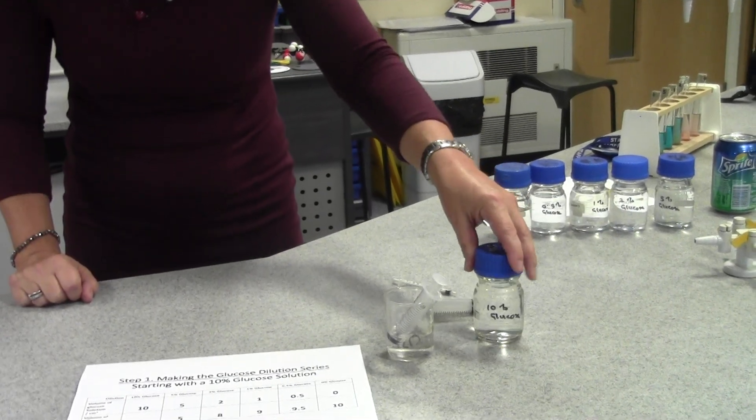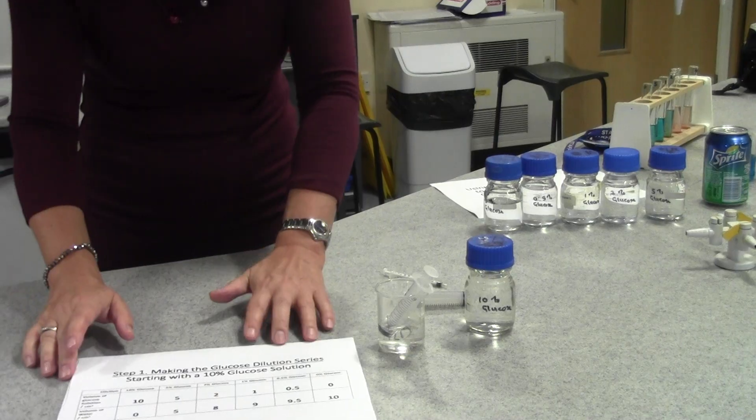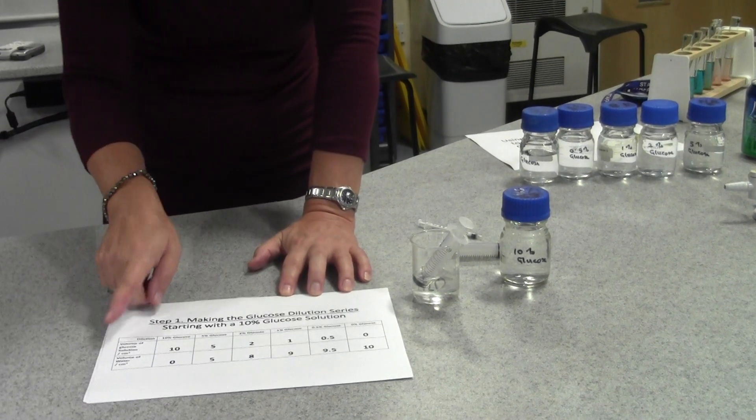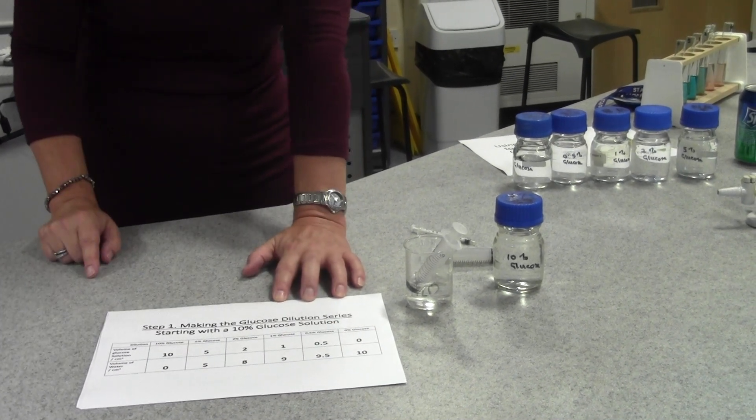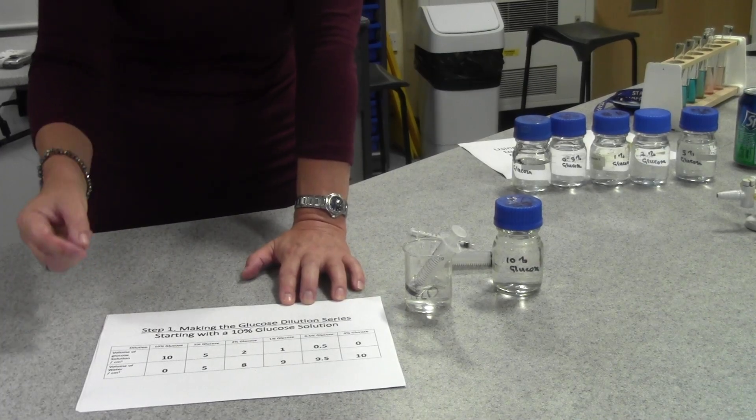If you've got 10% glucose solution to start with it's quite easy to make a range of dilutions and the table here shows you the different volumes you'll need to make 10 centimetres cubed.